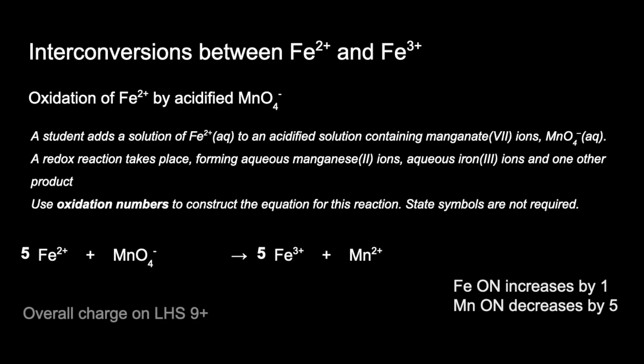At the moment we've got an overall charge on the left hand side of 9+: 5 times 2+ is 10+, factoring in the 1− from MnO₄⁻ gives 9+. The overall charge on the right is 17+: 5 times 3+ is 15+, plus 2+. So to balance, we put 8 H⁺ ions on the left hand side.